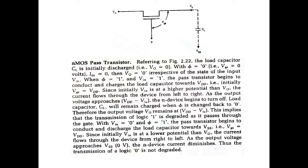First, we will see the N-MOSFET transmission gate, referring to figure 2.22 from the Weste book. In this figure, the load capacitor CL is initially discharged — that is, V-out equals 0. If V-out equals 0, then we can say it is in the static condition. Now we consider the output at the dotted lines; CL represents the load capacitor. The load capacitor is initially discharged, which means the output voltage V-out equals 0.